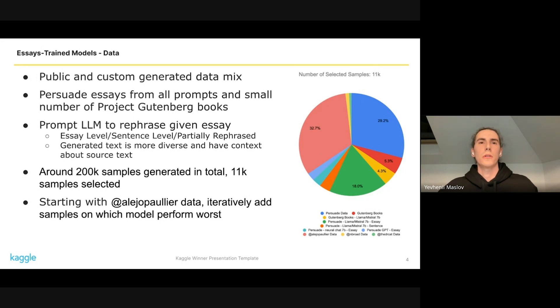We either gave the full text to the model or separate sentences to the model. We also generated partially rephrased essays when we gave only half of the sentences to the model and kept the other half unchanged. We found that data generated this way is more diverse compared to data generated by using only the assignment as prompt, and the text has at least some context about the source text.